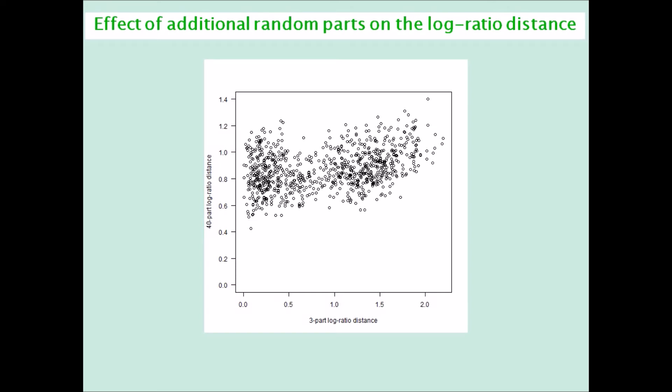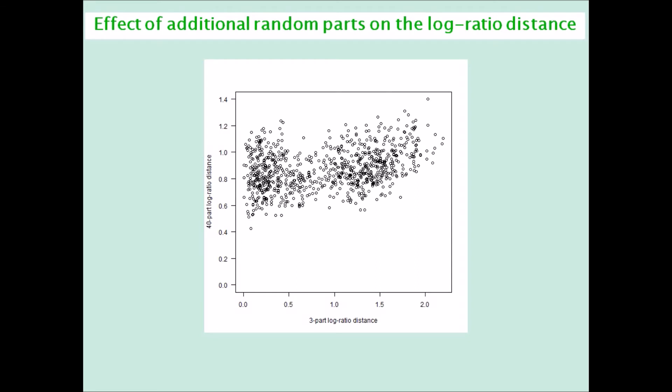If you think that dimension reduction by log ratio analysis is going to help you, then I'm afraid you will be disappointed. This is the initial log ratio biplot showing the seasonal separation.